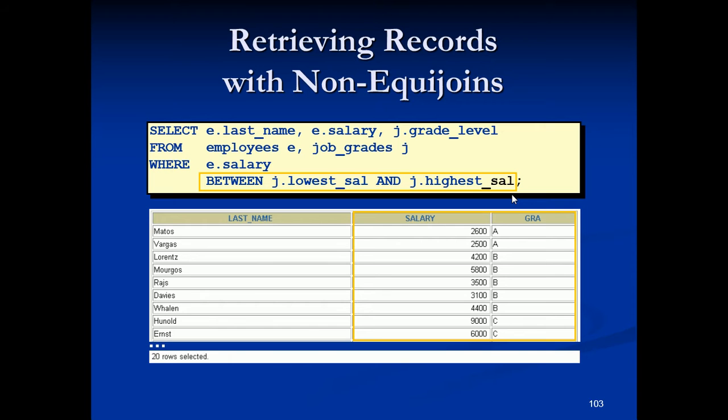The first one is none of the rows in the job grades table contain grades that overlap. That is, the salary value for an employee can lie only between the low salary and high salary values of one of the rows in the salary grade table. And the second reason is all of the employee salaries lie within the limits provided by the job grade table. That is, no employee earns less than the lowest value contained in the lowest salary column or more than the highest value contained in the highest salary column.